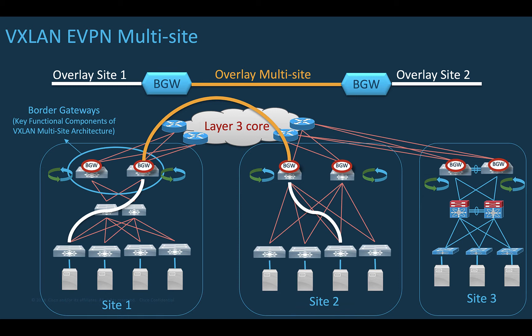The objectives of VXLAN EVPN multi-site are several: to offer a solid boundary reducing the failure domain to its smallest diameter in a very simple fashion; to significantly increase the end-to-end scalability; and to offer the flexibility to dedicate devices for the border gateway roles or dual-attach host and service nodes to the border gateways, from which you can also connect each fabric to an external layer 3 core network. The multi-site architecture provides very granular control of how layer 2 and layer 3 communication is extended across the sites.